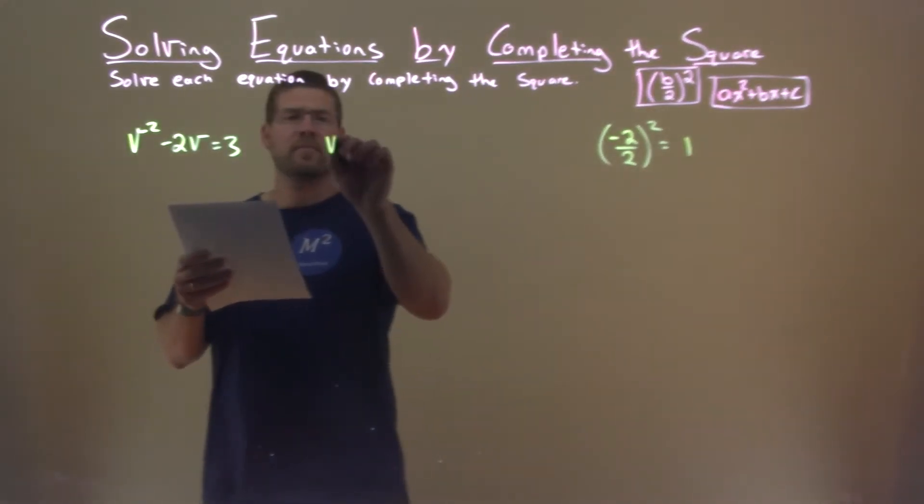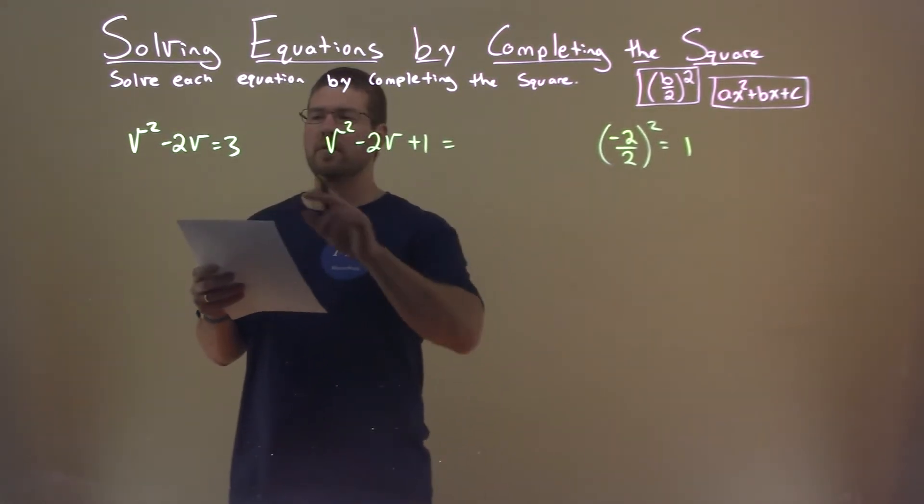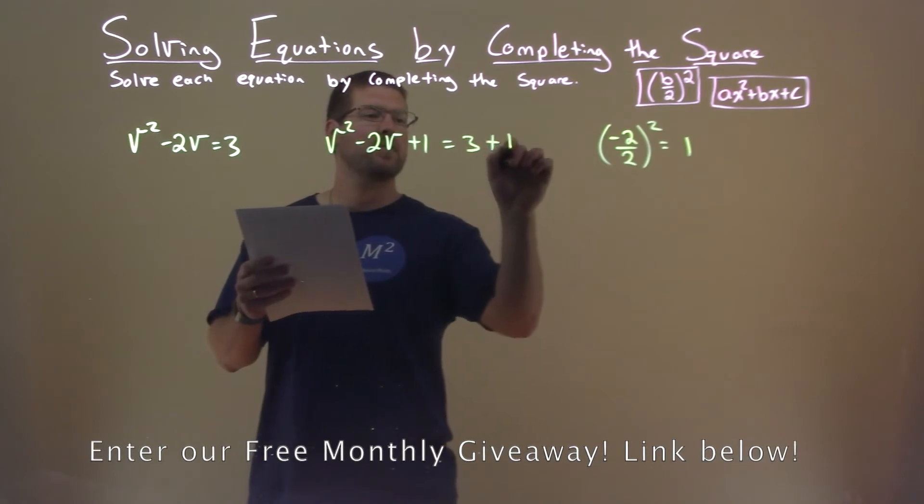So I'm going to take my equation, v squared minus 2v, and I'm going to add a 1 to both sides of the equation, equals 3 plus 1.